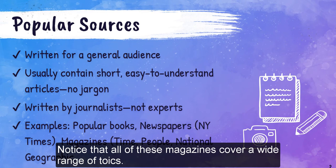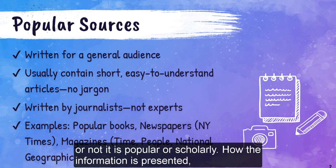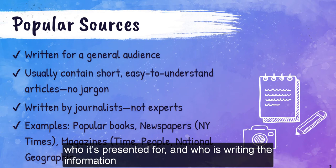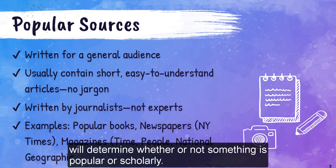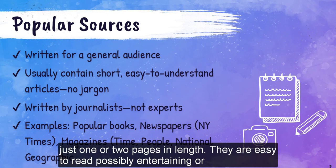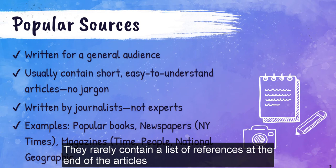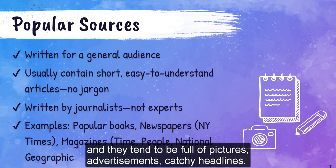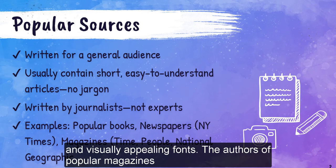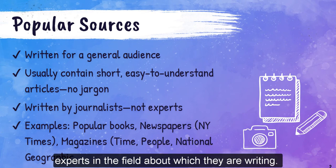Notice that all of these magazines cover a wide range of topics. The topic of the magazine has no bearing on whether it's popular or scholarly. How the information is presented, who it's presented for, and who is writing the information will determine whether something is popular or scholarly. Popular magazines tend to have shorter articles, many times just one or two pages. They are easy to read, possibly entertaining or persuasive, and do not use a lot of complicated words or jargon. They rarely contain a list of references, and they tend to be full of pictures, advertisements, catchy headlines, and visually appealing fonts. The authors are usually journalists or freelance writers, not experts in the field about which they are writing.